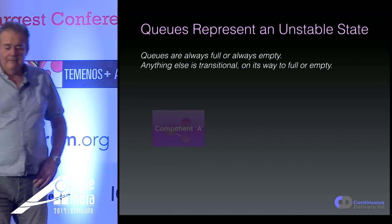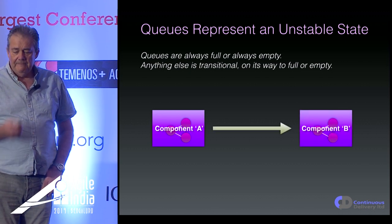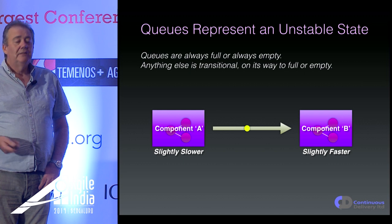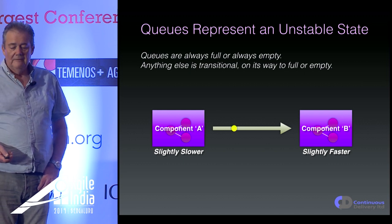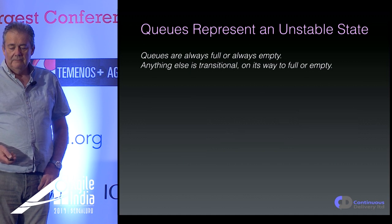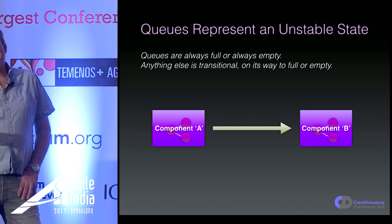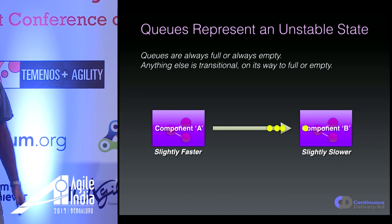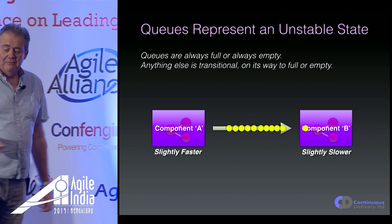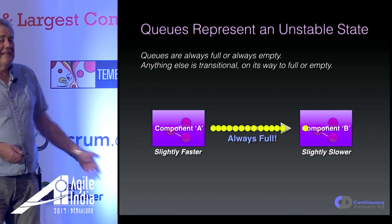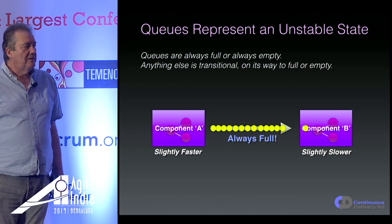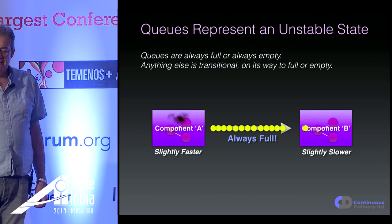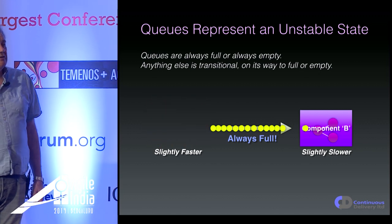Here's the unstable state thing. Component A is talking to component B. If component A is slightly slower than the consumer component B, the message queue between them is always empty — not very problematic. But if it's the other way around, if component B is slightly slower, then over time the queue is going to get full — essentially it'll always be full. Making the queue bigger doesn't help; this is a dynamically unstable state. The queue is still going to fill up, and you may drop messages or the system will fall over.